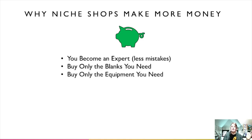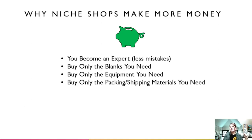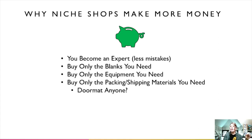You buy only the blanks that you need — you know exactly what you need and how to schedule your inventory. You buy only the equipment you need: if you're only going to do mugs and drinkware, you can forego a heat press, or vice versa, if you're just doing baby bibs you don't need a mug press. You buy only the packing and shipping materials you need. I want to bring up doormats — I've seen so many times on Facebook pages where somebody gets their first doormat order and then scrambles to find a box.